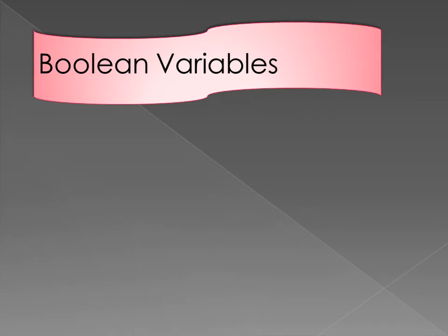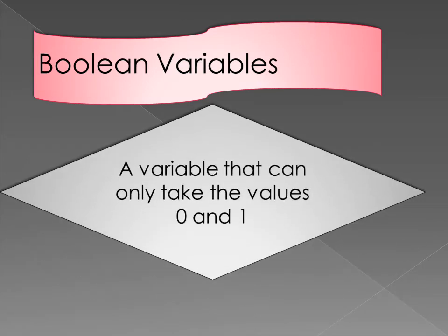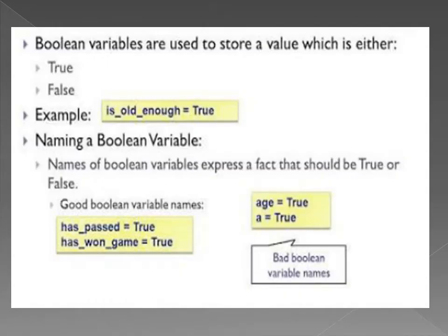Next is boolean variables, which can be defined as a variable that can take only the values 0 and 1 in terms of true and false — these variables are called boolean variables. Boolean variables are used to save a value, and this value may be true or false. For example, a boolean variable 'is old enough' saves a true value. The name of the boolean variable must be meaningful because it expresses an effect that should be true or false.